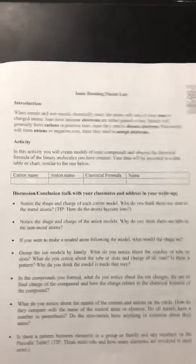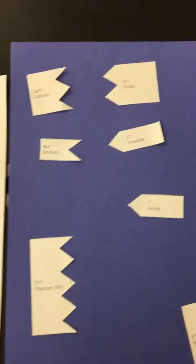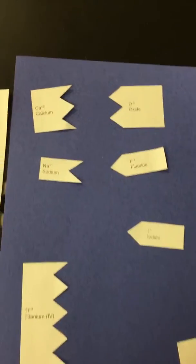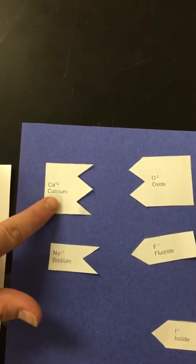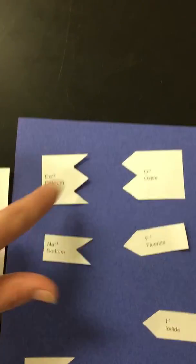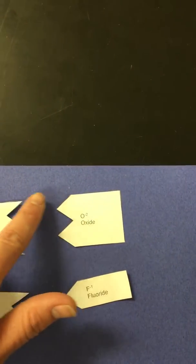So in this activity your group members are going to cut apart these pieces so that they look like this. Note all of the cations have these insertion edges because they're losing electrons and all your anions will have these outgoing edges because they're accepting electrons.